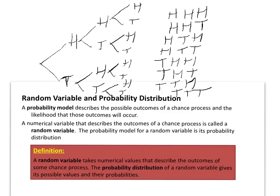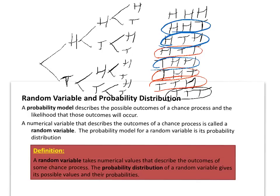Now I can start recording probabilities. For zero heads, there's only one way — getting three tails. For one head, there are three different ways. For two heads, there are also three ways. For three heads, there's only one way. So I can make a list of all the different outcomes and their associated probabilities.